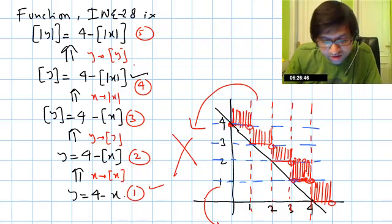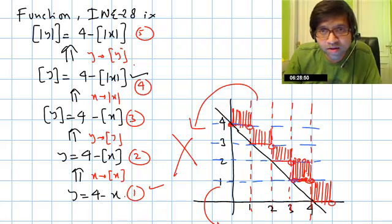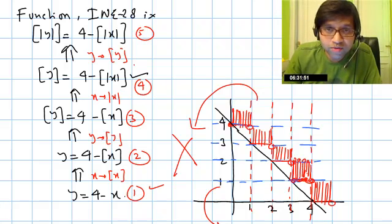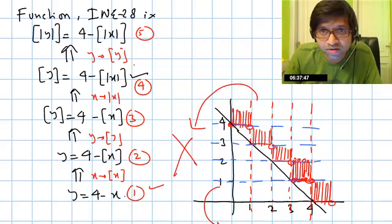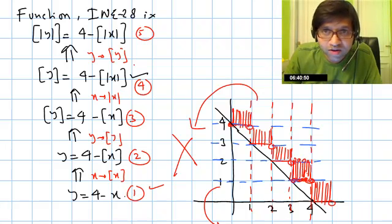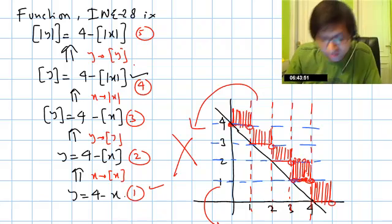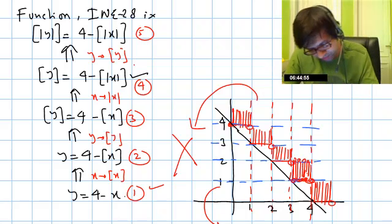To repeat the key point: don't just choose some transformations and apply them randomly. First, take the function whose graph is to be drawn and step by step reduce its complexity — and the complexity should be reduced using a valid transformation only. Once you have the simplified form and know how to draw its graph, start from that and retrace the path back to the original function.